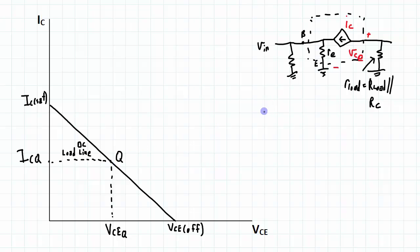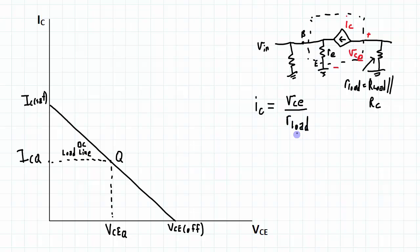So there's going to be a change of IC, and the relationship between that IC and VCE — from looking at this circuit — IC is going to be equal to the voltage across R load divided by R load. And this IC represents the change in IC across the AC load line,